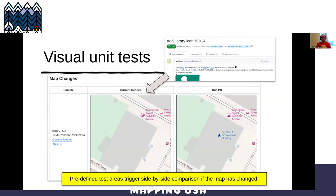Another thing we did was take a screenshot of the previous map and the map associated with the change you submitted, then do side-by-side comparisons. We have these visual unit tests. On screen is a unit test from a pull request we have live right now for adding icons for libraries. You can see the icon not there on the left, and there on the right. This sticks — so the next time someone modifies something in this map window, it'll show you the change so you can make sure there are no regressions.